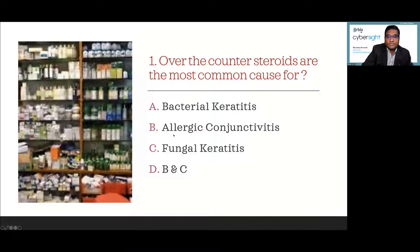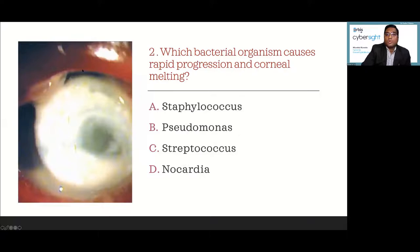Second question: Which bacterial organism causes rapid progression and corneal melting? A, Staphylococcus; B, Pseudomonas; C, Streptococcus; D, Nocardia.